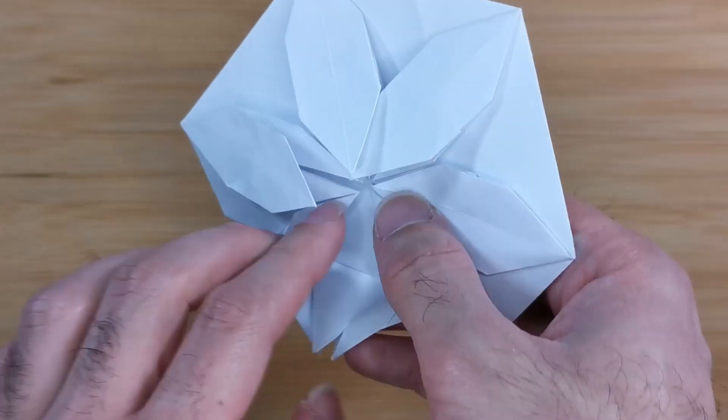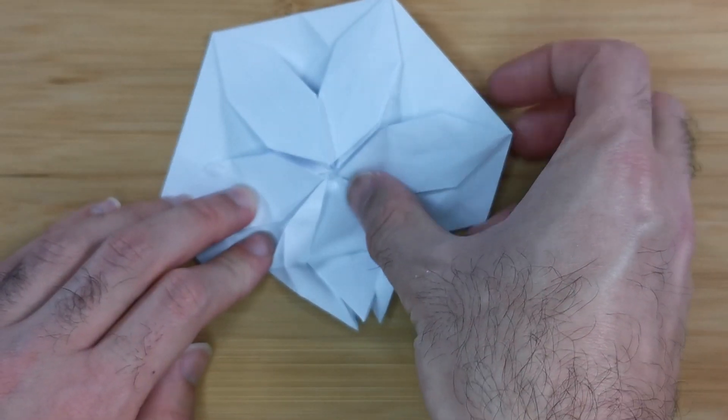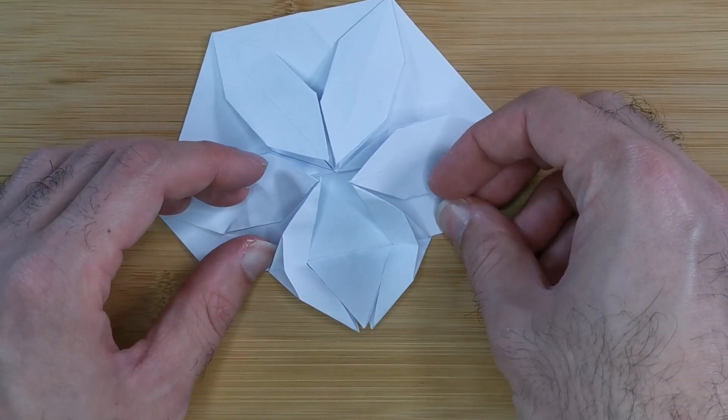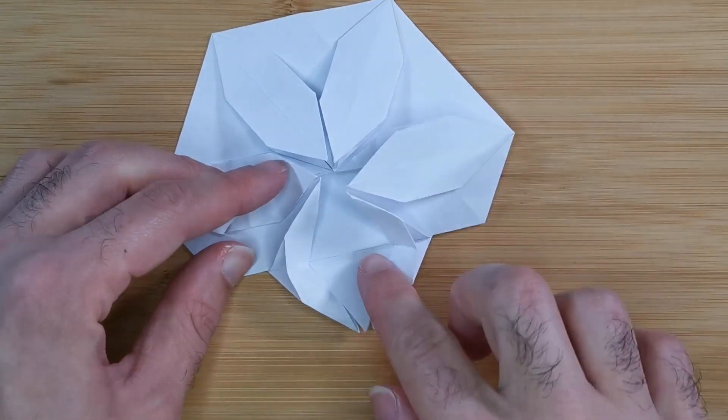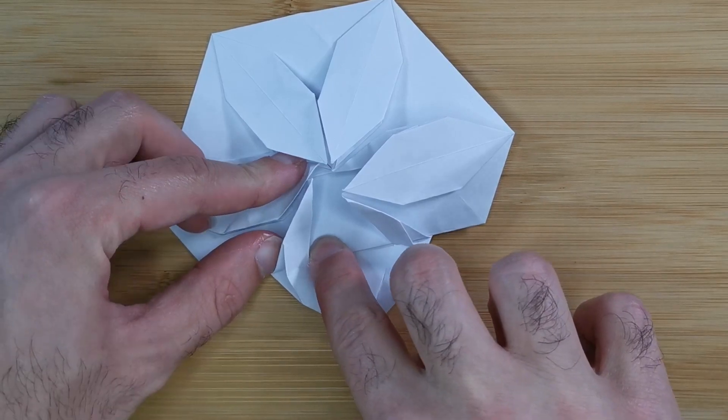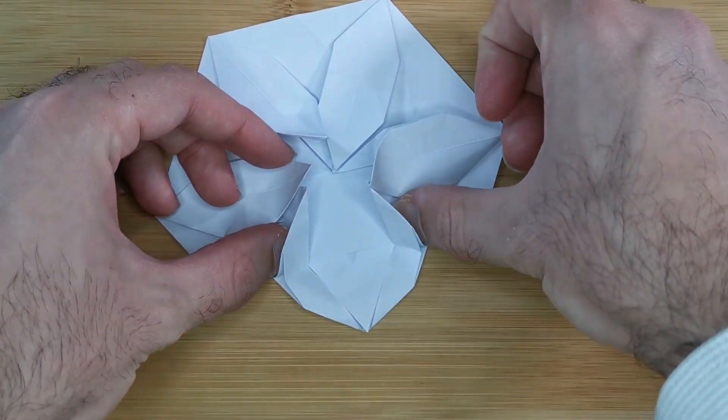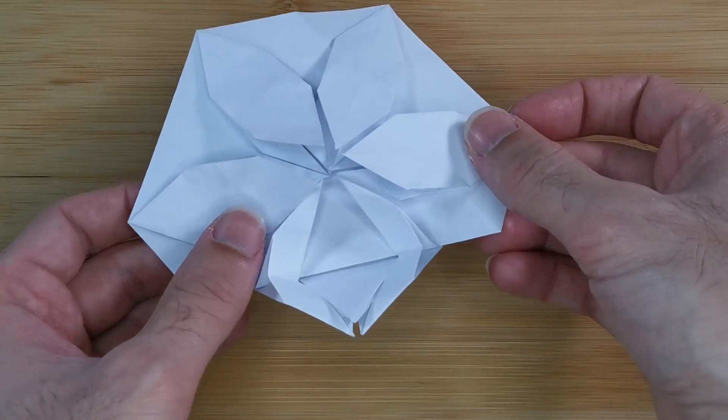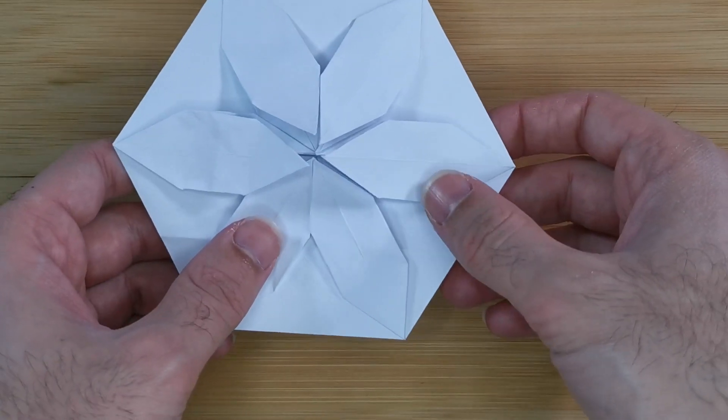Then flip the model back over and strengthen the crease making sure not to crease anywhere on the branches. So just on the middle and under the branches here like this. So you can see there are no crease marks on the branches.